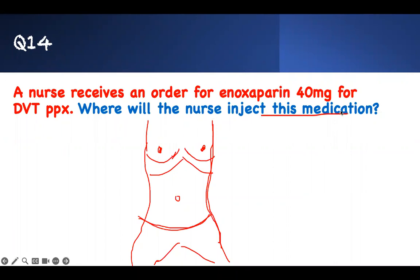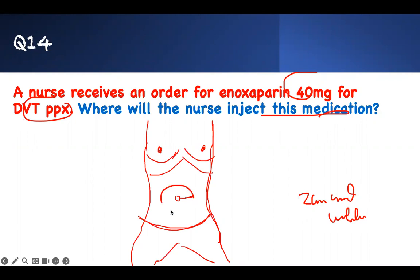Next question: Where would the nurse inject enoxaparin 40 mg for DVT prophylaxis? For Lovenox injection, you need to be two centimeters away from the umbilicus — not right next to it. If the umbilicus is here, count two centimeters out. You can go in any direction around it. That zone is safe. If you get closer, the patient will bleed. It is subcutaneous, so inject in that two-centimeter lateral zone around the umbilicus.